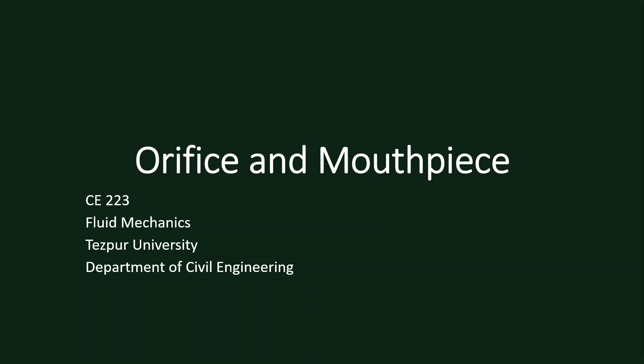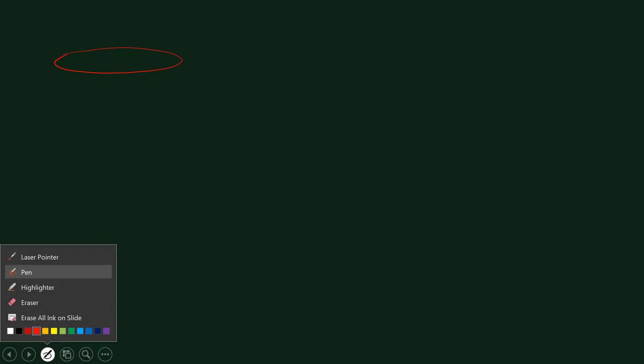Hello everyone. Here we are going to discuss about orifice and mouthpiece. These are both devices used for measurement of discharge. An orifice is simply an opening, maybe of any shape — circular, square, rectangular, or any kind of other shape, or even some irregular shape.